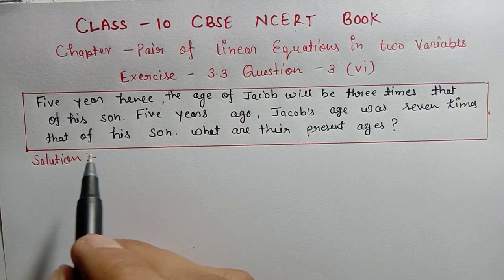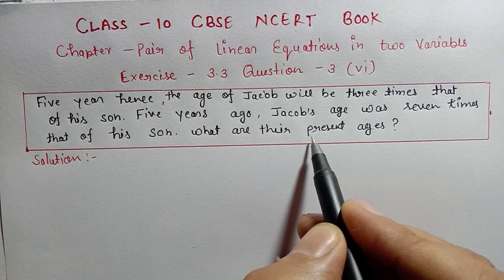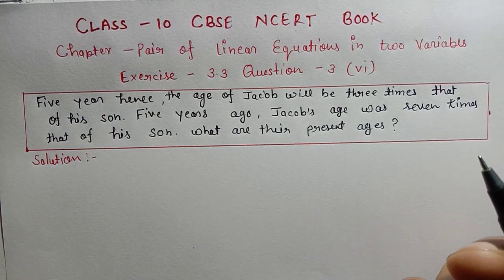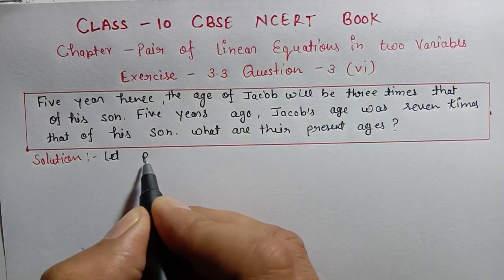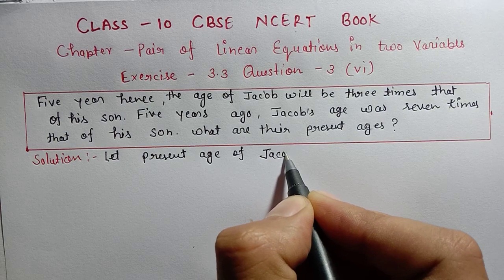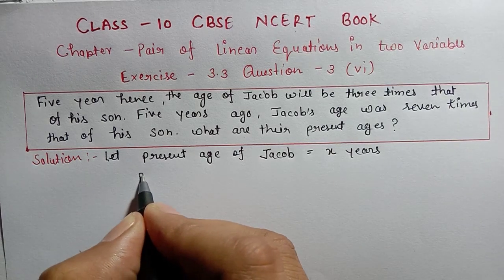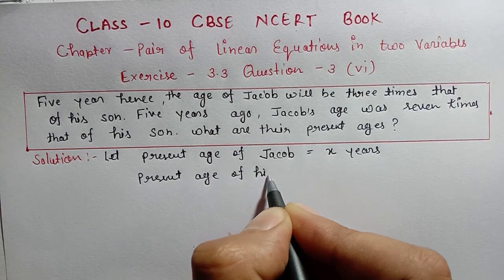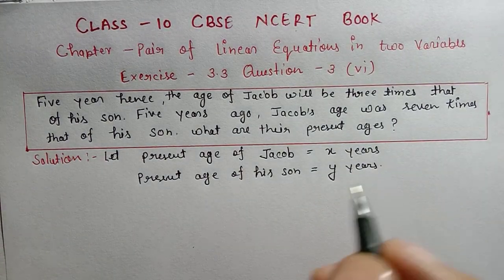As I have already told you about this type of question — first of all, you have to find the present age. So let us define: let the present age of Jacob be x years, and the present age of his son be y years.